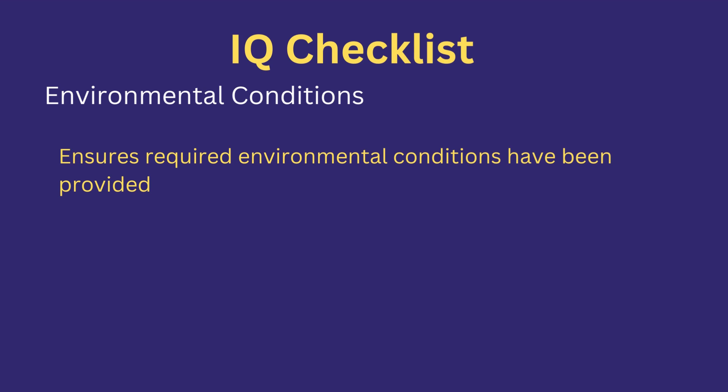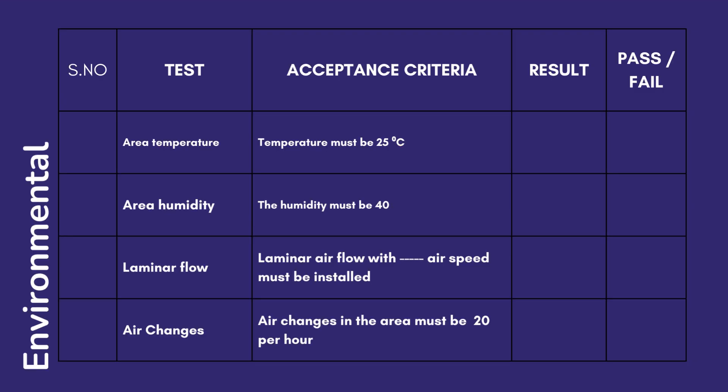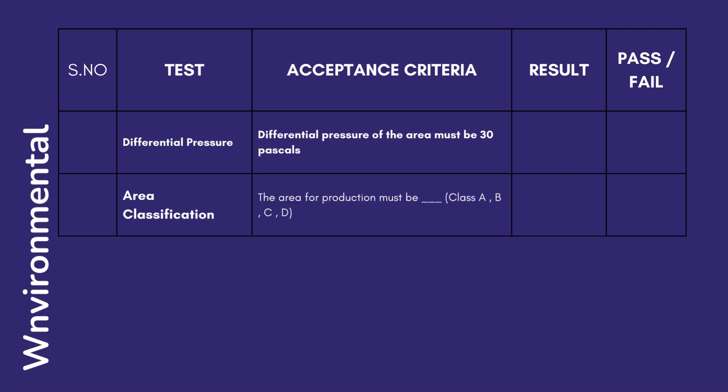Environmental conditions: in this test, different environmental conditions are verified which are vital for satisfactory equipment operation. The possible checklist could include: Area temperature — must be 25 degrees centigrade. Air humidity — humidity should be 40%. Laminar flow — laminar airflow with desired airspeed must be installed. Air changes — air changes in the area must be 20 per hour. Differential pressure — must be 30 Pascals. Area classification — the area for production must be Class A, B, C, or D.